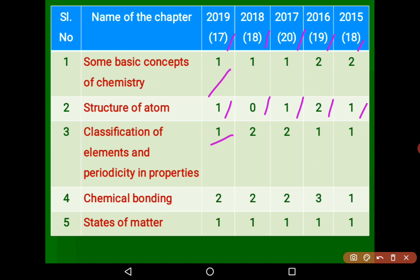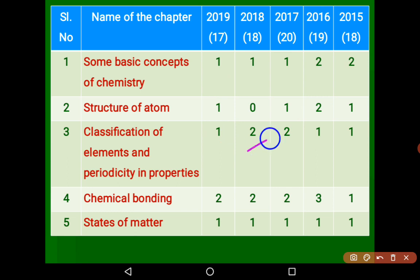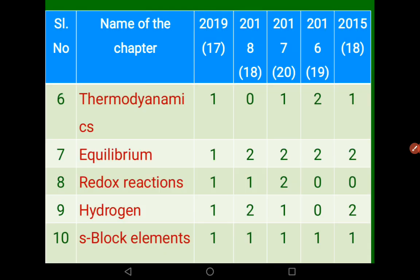Classification of Elements had 1 mark in 2019, 2 marks in 2018, 2 in 2017, 1 in 2016, and 1 in 2015. Chemical Bonding is an important chapter in First PUC — consistently 2 marks asked every year. States of Matter had 1 question asked every year. Thermodynamics is not that important for CET — 1 mark in 2019, 0, 1, 2, 1. Equilibrium is important; last year only 1 mark but consistently 2 marks in previous years.